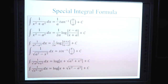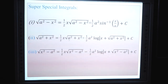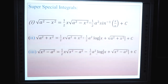Super special integrals: ∫√(a² - x²) dx = (1/2)x√(a² - x²) + (1/2)a² sin⁻¹(x/a) + C. ∫√(a² + x²) dx = (1/2)x√(a² + x²) + (1/2)a² log|x + √(a² + x²)| + C. ∫√(x² - a²) dx = (1/2)x√(x² - a²) - (1/2)a² log|x + √(x² - a²)| + C.